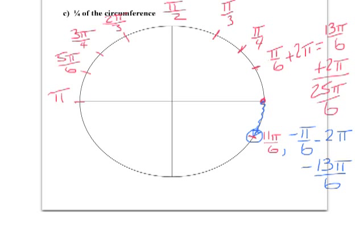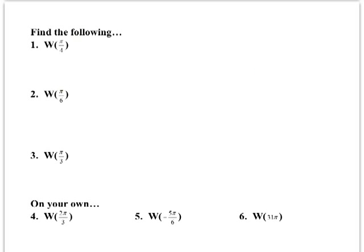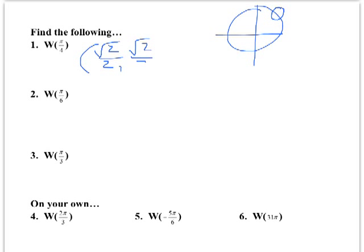This idea — that all these points have an infinite amount of names — is what we call the wrapping function. For example, W(π/4) means the wrapping function of π/4: I'm asking what are the coordinates at π/4. Since π/4 is in the first quadrant, and from the unit circle you should have memorized, the coordinates are (√2/2, √2/2).